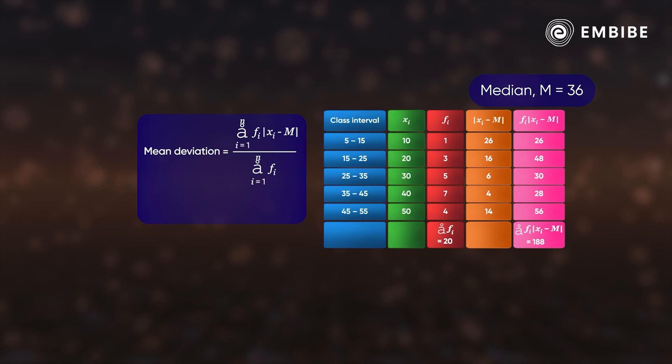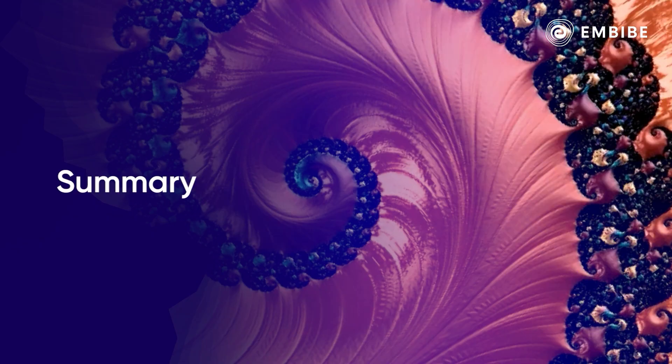Finally, the mean deviation about the median is the sum of these products divided by the total frequency, that is 188 ÷ 20, which equals 9.4.